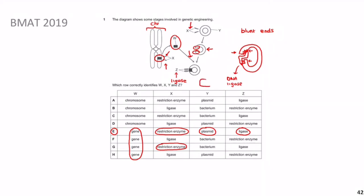After inserting the gene into the plasmid, you slot this recombinant plasmid into a bacterium — a step called transformation. The bacterium then divides by binary fission repeatedly. After several rounds you might have a million bacteria, each carrying the plasmid with the insulin gene. They transcribe and translate that gene to produce large quantities of insulin, which is then purified and given to diabetic patients.